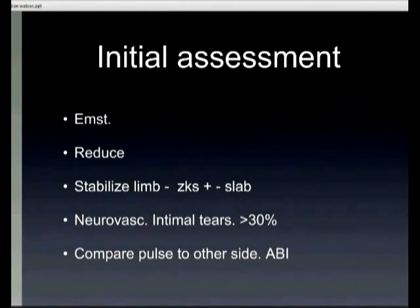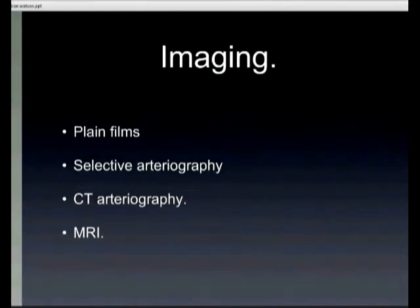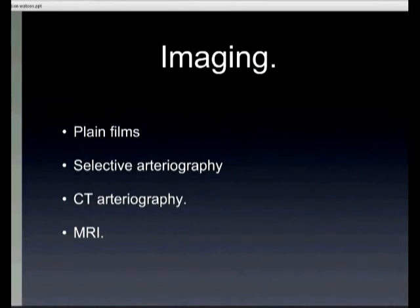In terms of managing the overall dislocation, plain x-rays pre and post reduction are needed, and MRI is probably the gold standard for assessing the ligaments. Management options include non-reconstructive or reconstructive approaches. Non-reconstructive aims for a stiff but stable knee and may be done with an ex-fix, Zimmer splint, or a hinged knee brace. This would mostly be reserved for patients with other significant injuries precluding ligament reconstruction, or patients unlikely to comply with rehabilitation.